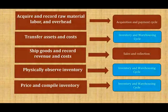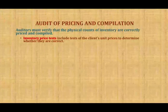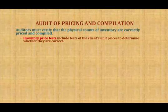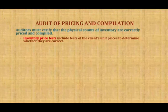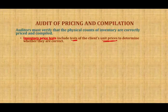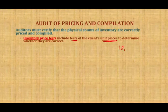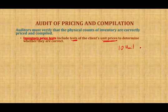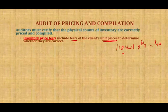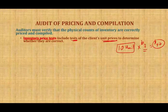Inventory and warehouse pricing — the auditor must verify that the physical count of inventory is correct and compiled. We want to make sure the prices are correct and everything is being added, posted, and compiled correctly. We have something called the inventory price test, which includes testing the client unit prices to determine whether they are correct. For example, if they're taking 10 units of something and multiplying those 10 units by the correct price of $2, they should get $20. Are they making an error or a mistake with the multiplication?